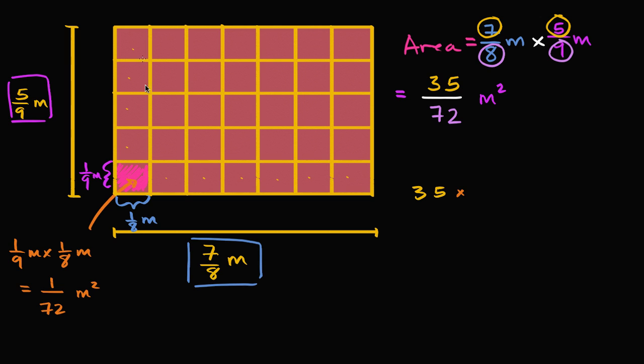So the area of all of them combined is going to be 35 times the area of each of them. 35 times 1 72nd of a square meter. And what's that going to be? Well, that's going to be exactly what we got up here. 35 times 1 72nd of a square meter is going to be 35 72nds of a square meter. And this 35 is the same one that we had in yellow. So once again, you can just multiply 5 ninths times 7 eighths to get what we have got here. But hopefully when we thought about the area of each of these rectangles, it might make a little bit more intuitive sense where this number came from.